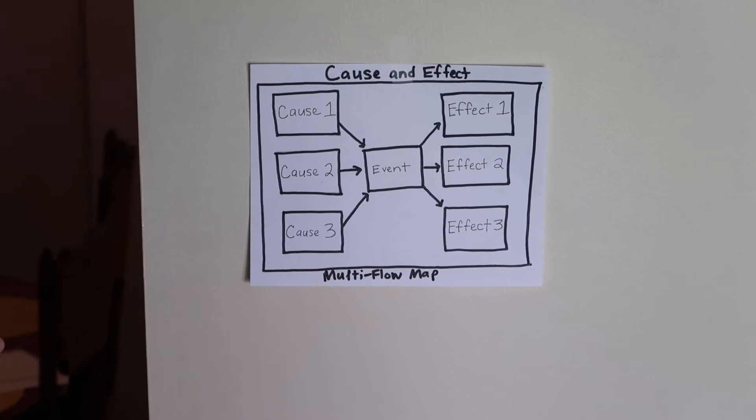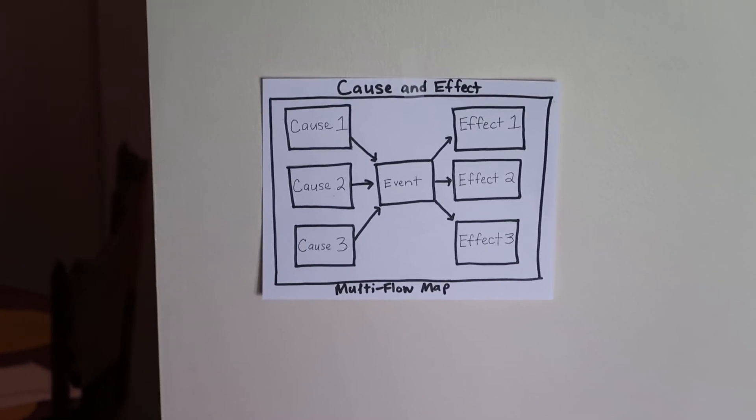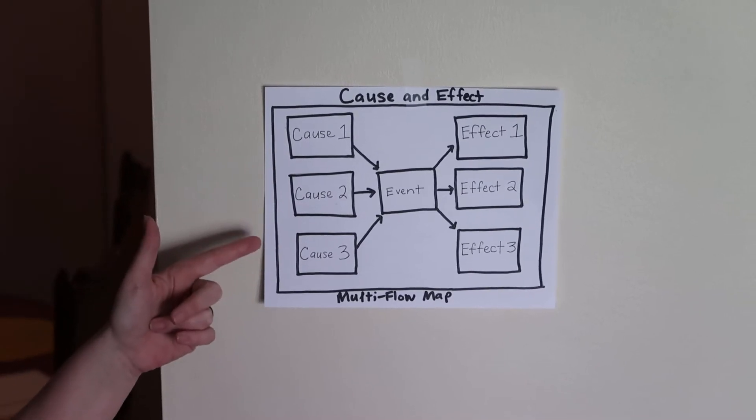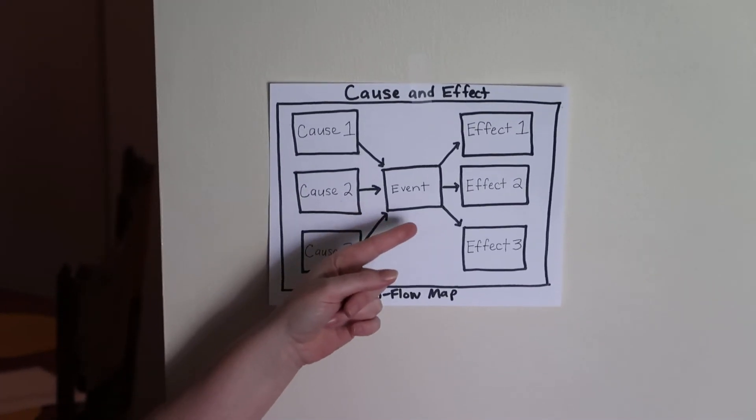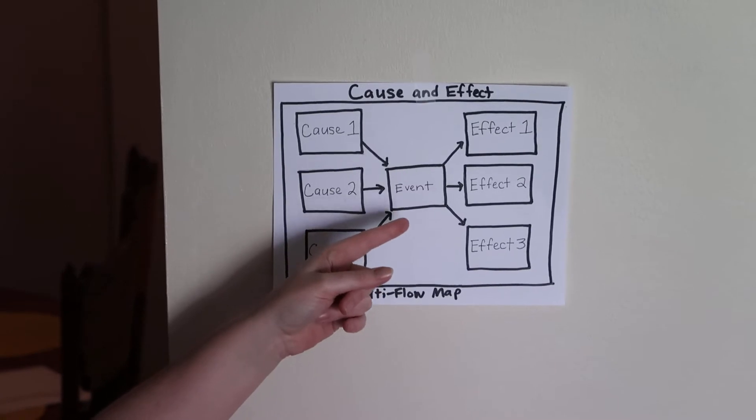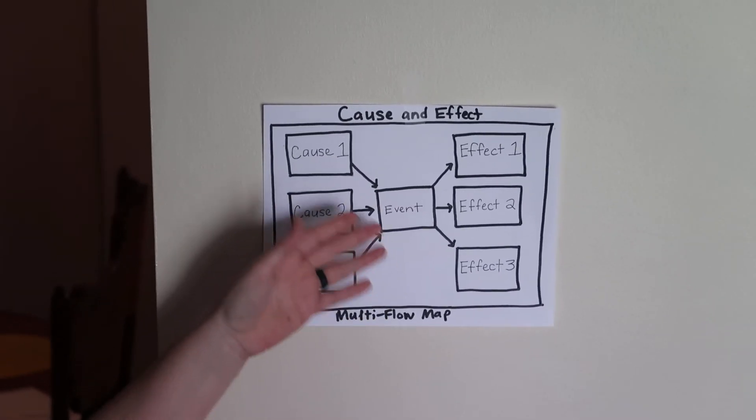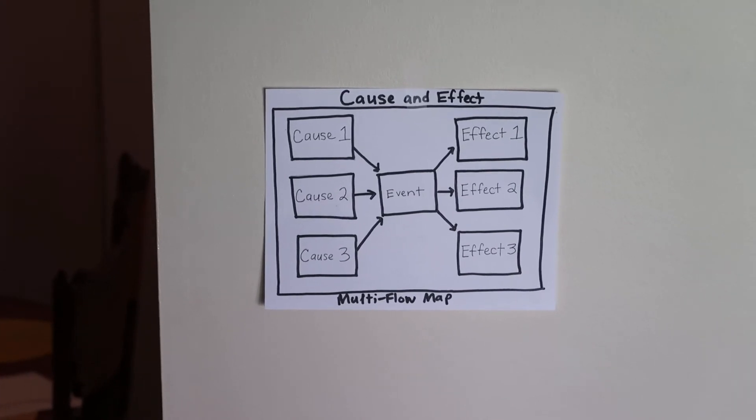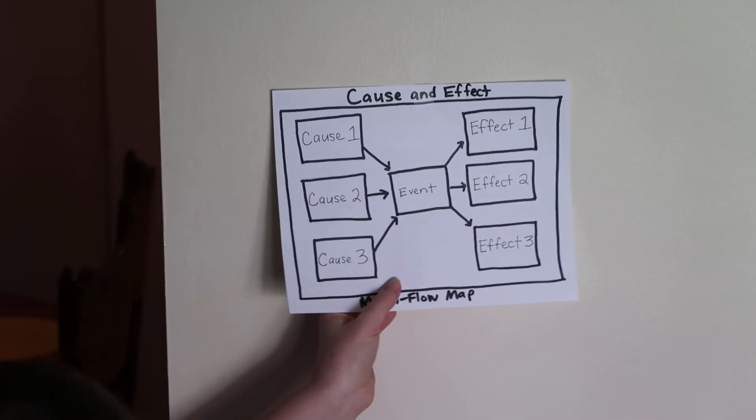And as you can see, you have arrows pointing to the event, which then leads into the effects of that event. So, you've got causes that make this event happen. And then, in a sense, this event itself becomes a cause for these three effects over here. So, the effects are the result of the cause.